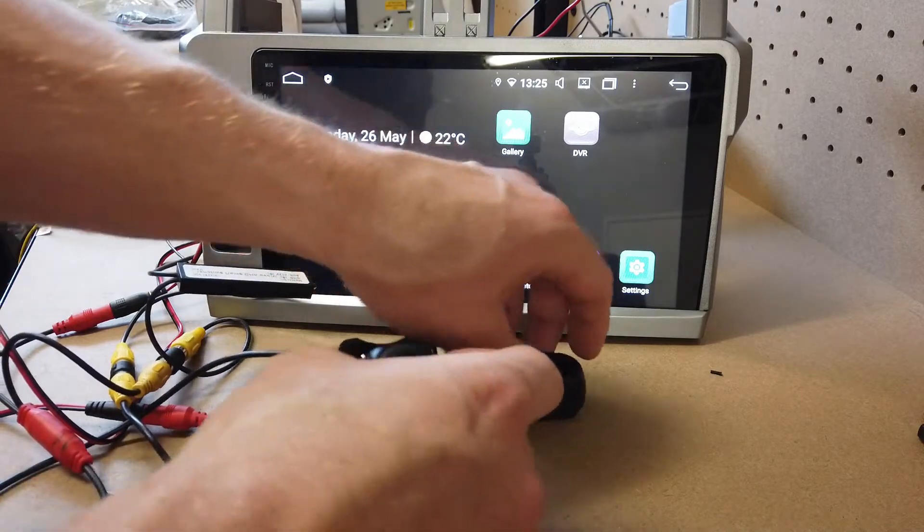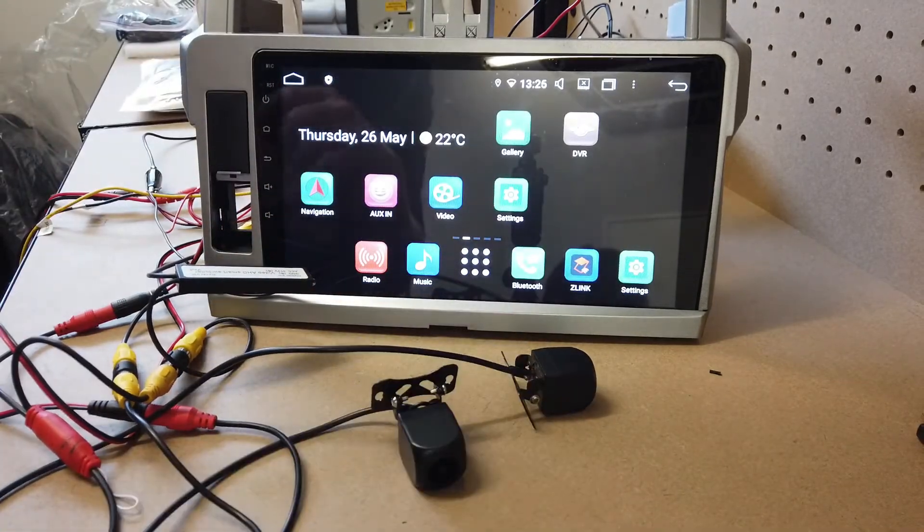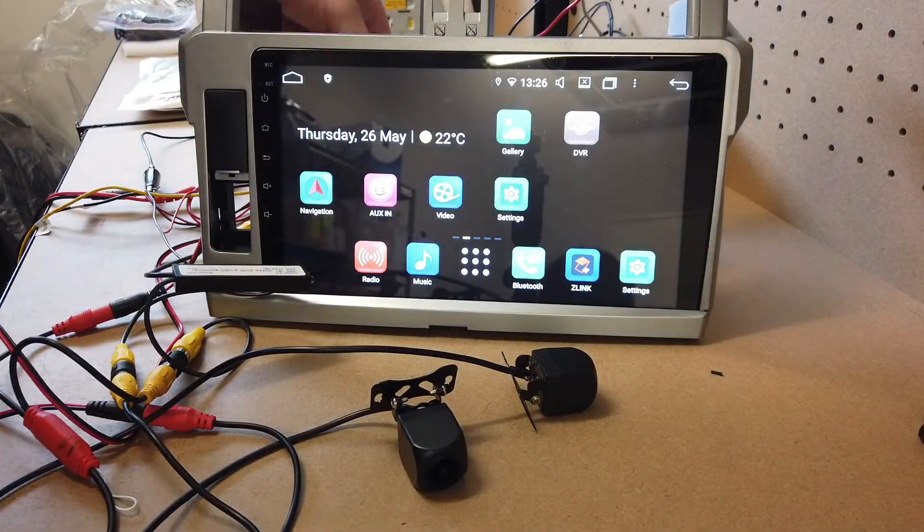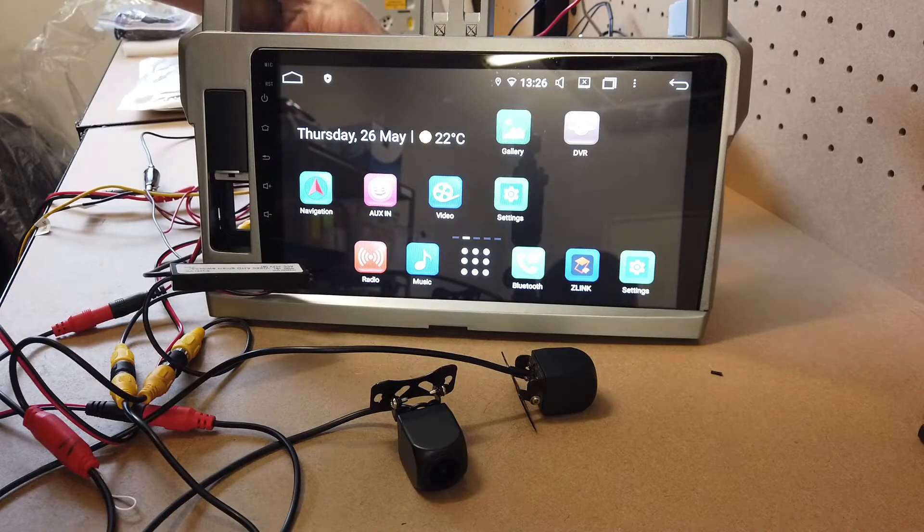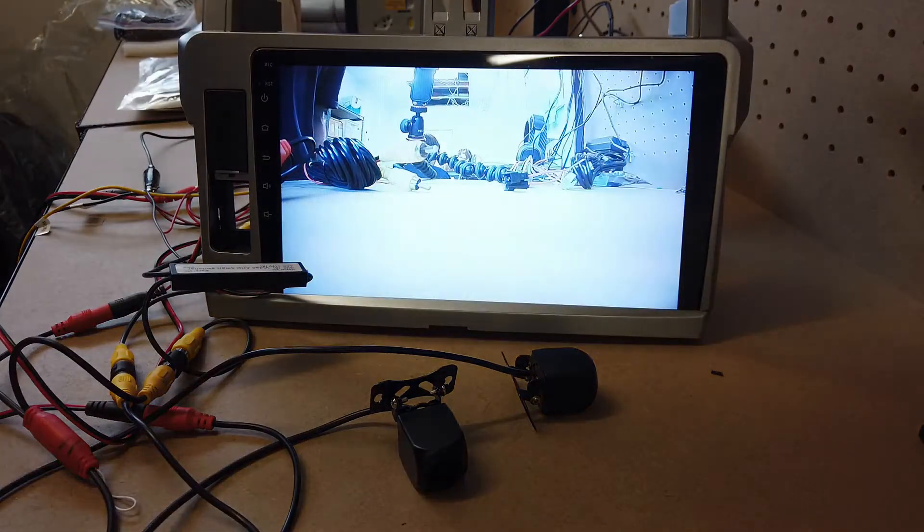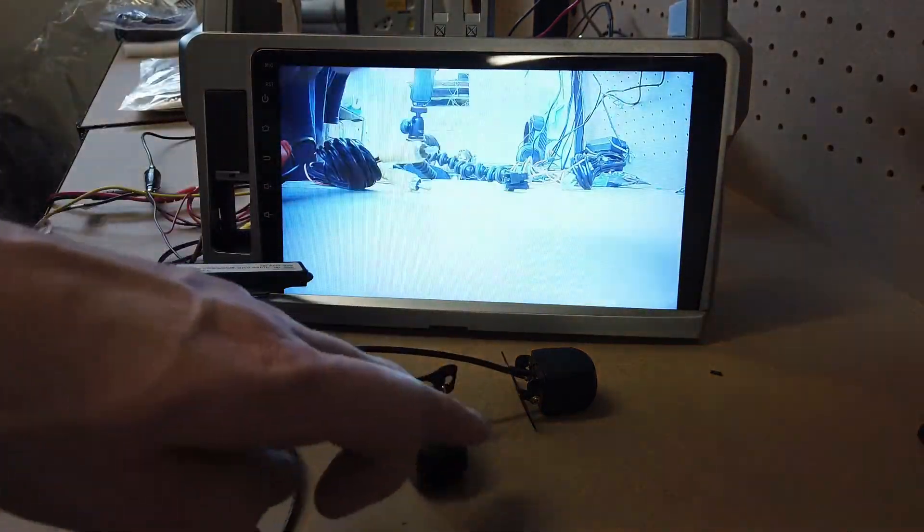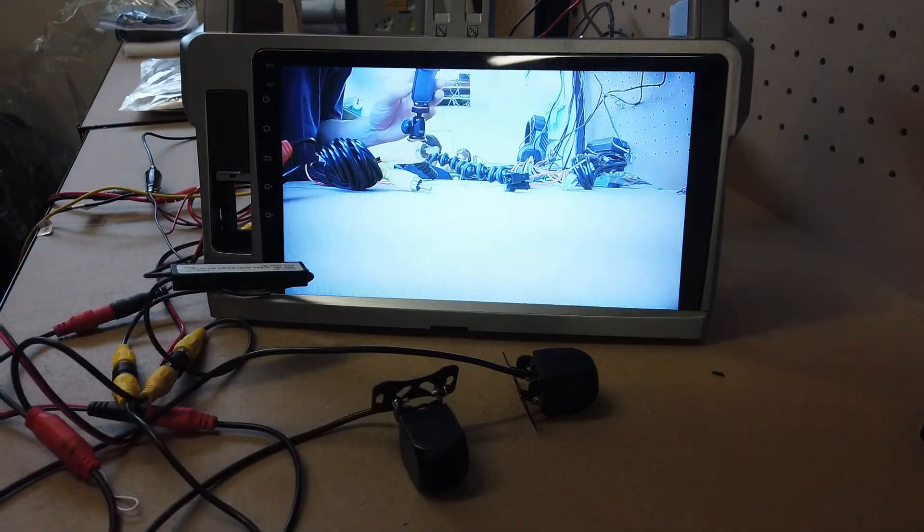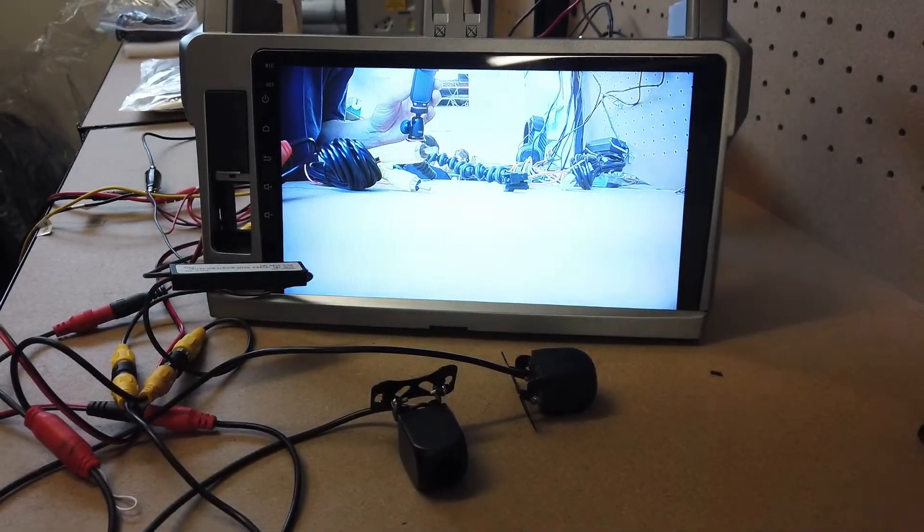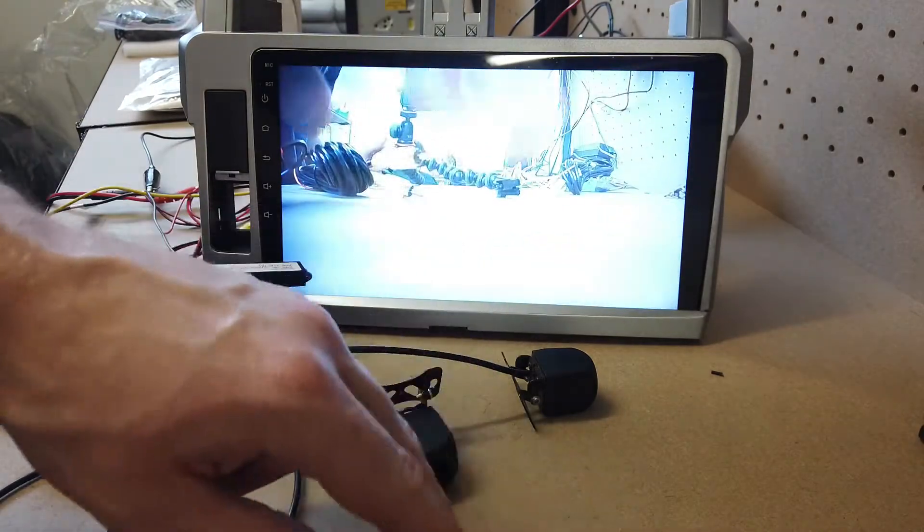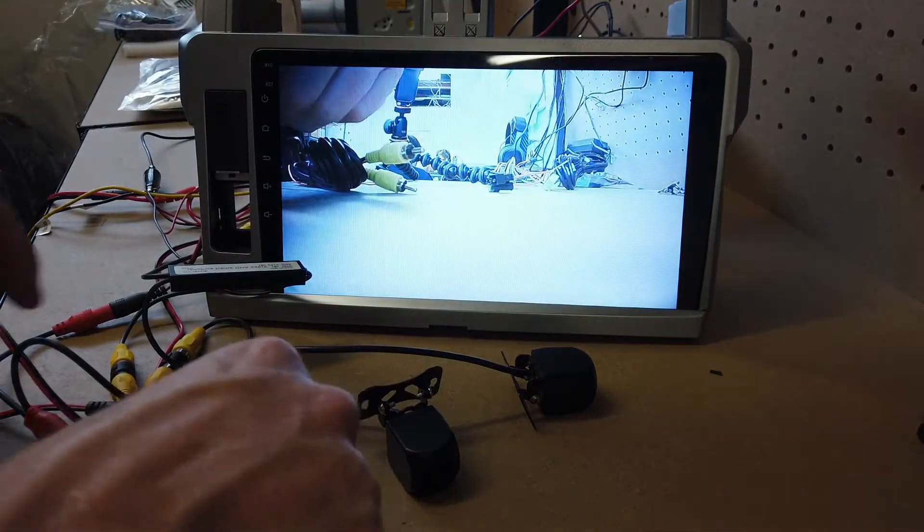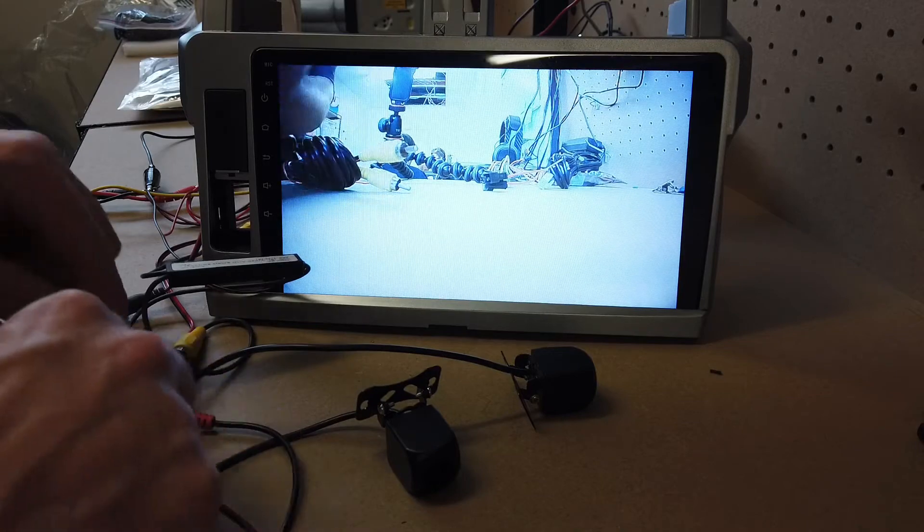You can see we have two cameras hooked up here. Now put the head unit to reverse - this is just like putting your car into reverse. You can see this camera here showing up, which would be our caravan camera when the caravan is connected.